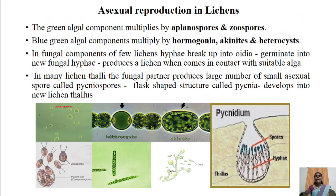Coming to asexual reproduction in lichens. Lichen is made up of two important components: the algal component called phycobiont and the fungal component called mycobiont. In the algal component, if it is a green alga belonging to Chlorophyceae, that green alga multiplies asexually by producing two types of spores: aplanospores and zoospores.